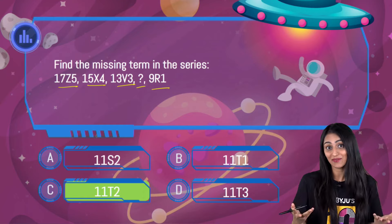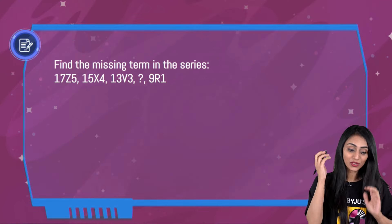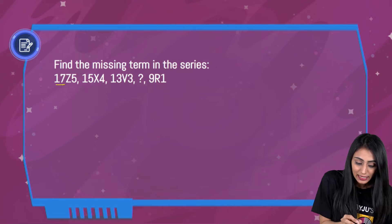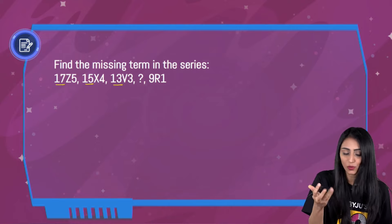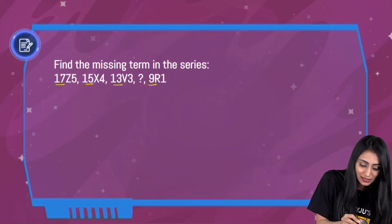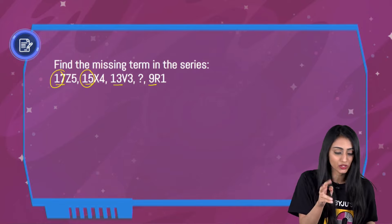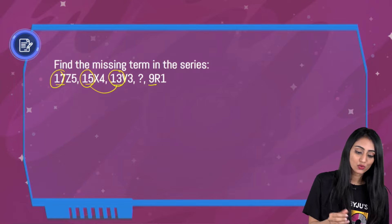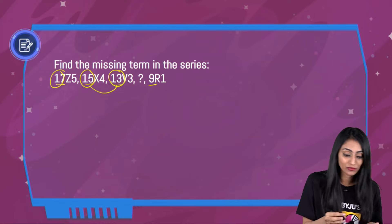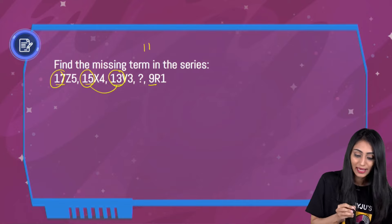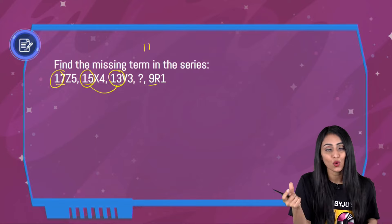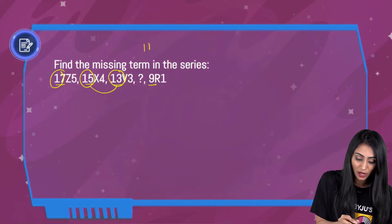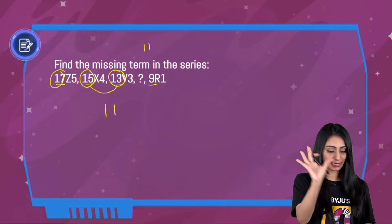Now let's see how we arrived at this solution — this is very interesting. If you carefully observe, we have 17, then 15, then 13, then the missing term, and then 9. Between 17 and 15 there is a difference of 2. Between 15 and 13 again, there is a difference of 2. So the missing number must be 11, and between 11 and 9, and between 11 and 13, there is also a difference of 2. So we are sure the first part is 11.